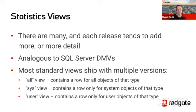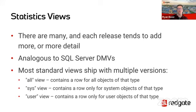When you look at those standard views, there's almost always going to be the same format. There's the all view, which gives everything for every type of that object — so for tables, you get both system tables and user tables. If you use the sys view instead, the rows returned are only for system objects that Postgres itself is maintaining, not anything you've created. Or there's the user view, which deals only with user-created objects, whether it's tables, views, indexes, or the like.